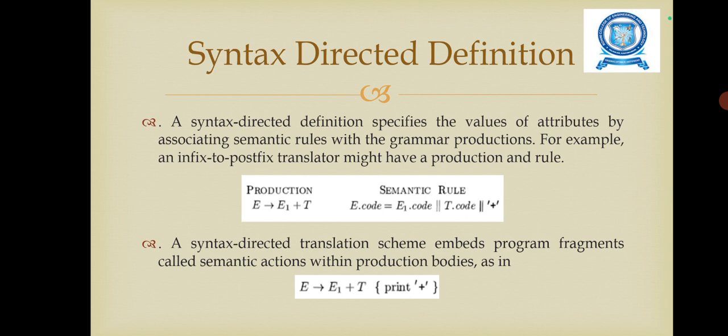A Syntax Directed Definition specifies the values of attributes by associating semantic rules with the grammar productions. For example, an infix to postfix translator might have a production E tends to E1 plus T, with semantic rule E.code equals E1.code, T.code, plus. This means it has two non-terminals E and T. The subscript in E1 distinguishes the occurrence of E in the production body from the occurrences of E as the head. The semantic rule specifies that the string E.code is formed by concatenating E1.code and T.code and the character plus.